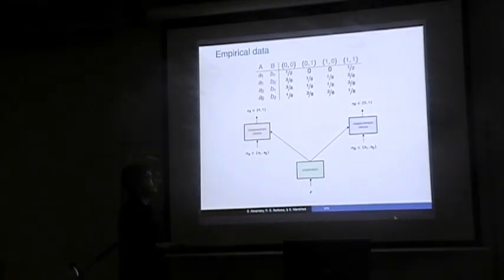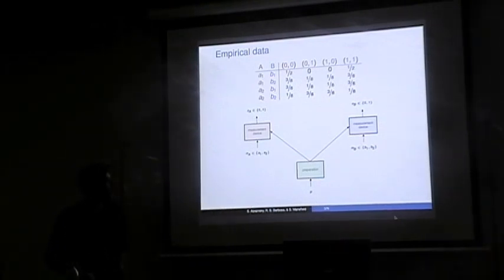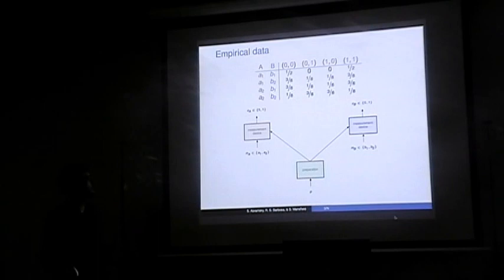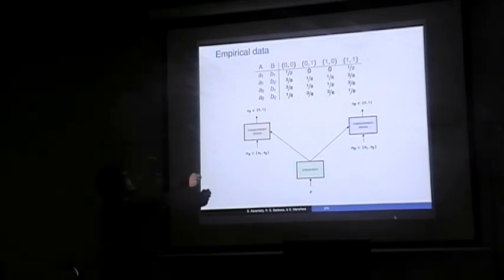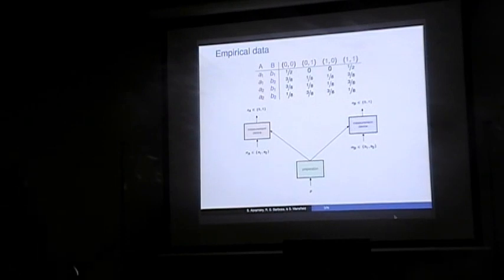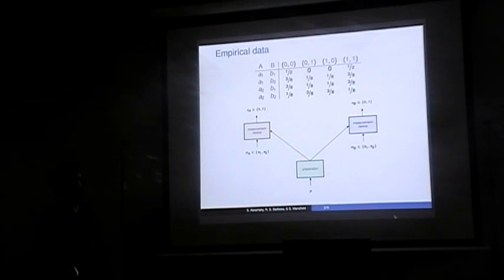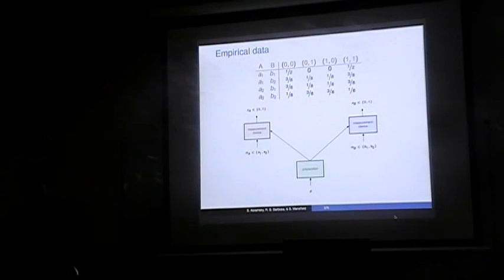So we have two dichotomic measurements each. What we call measurement contexts are the rows of the table. A1-B1 represents the situation in which Alice chooses to measure A1 and Bob chooses to measure B1 — that is the measurement context. For each measurement context, one will have a probability distribution on the possible joint outcomes, and similarly for all other measurement contexts. This is just the usual Bell scenario.